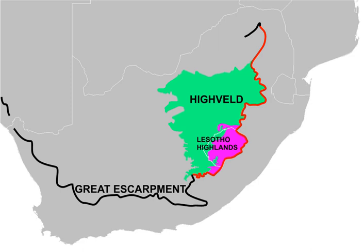Cities located on the Heiveld include Johannesburg, Pretoria, Bloemfontein, Vereeniging, Welkom, Carletonville, and the cities of the West Rand and East Rand. The diamond mining city of Kimberley lies on the border of the Heiveld and the southeastern Kalahari. About half of the gold ever produced in the world has been mined on the Heiveld since 1880. The largest deposits are located in the Witwatersrand, which centers on Johannesburg, with smaller deposits in the northern Free State near Welkom and Virginia.